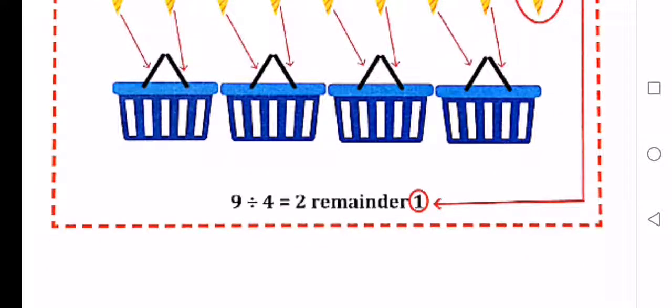So your answer is 9 divided by 4 equals 2, remainder 1. Now teacher will quickly explain the rest of the work for you in a separate video. Love you, bye.